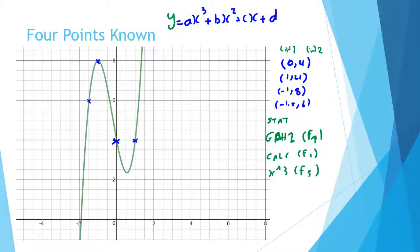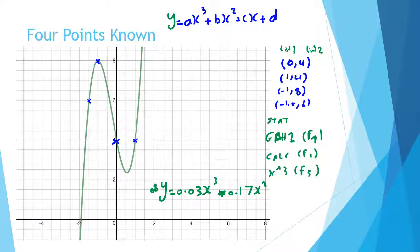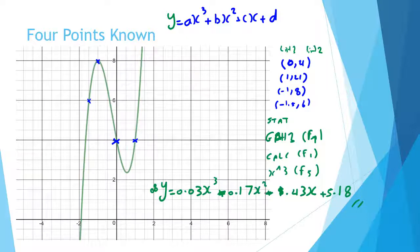Now we substitute the values of a, b, c, and d as given by the calculator. Your equation will be y equals 0.03x³ minus 0.17x² minus 1.43x plus 5.18. Remember that the b and c terms are negative.